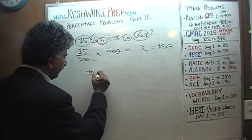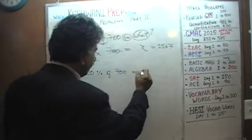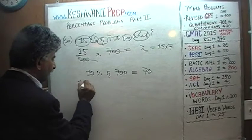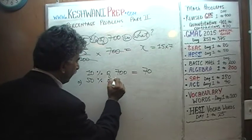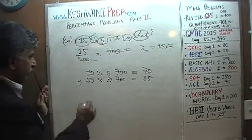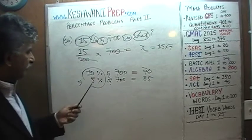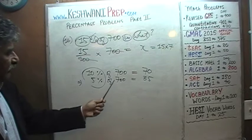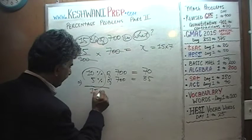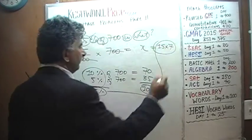We know 10% of 700 is 70. That implies 5% of 700 is half of 70, which is 35. 15% must be the sum of these two: 70 plus 35 equals 105. That's exactly the same result.